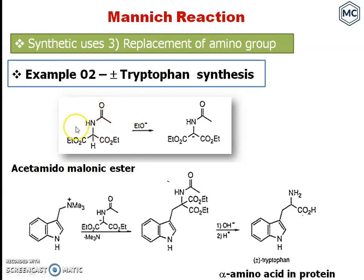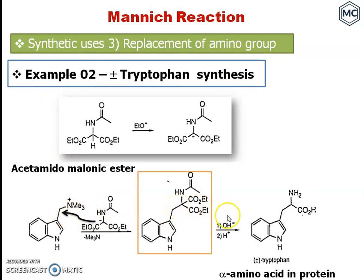For tryptophan synthesis, acetamidomalonic ester can act as a nucleophile. In the presence of base, it forms an enolate structure that can act as a nucleophile — as in the previous case where cyanide replaced dimethylamine. This nucleophile reacts with the gramine-derived compound and replaces the amine. The resulting compound on hydrolysis with base, followed by acidification, undergoes hydrolysis, decarboxylation, and final hydrolysis to give an acid. This is the important alpha-amino acid tryptophan, found in proteins.